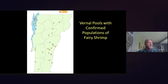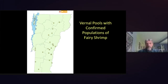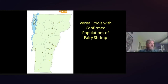Here's a map of pools confirmed to have fairy shrimp — not exhaustive, just opportunistically reported pools. They're widely distributed around the state. We don't know much about which species are found where; it's not a highly diverse group in the Northeast — Vermont probably has just two or three species.